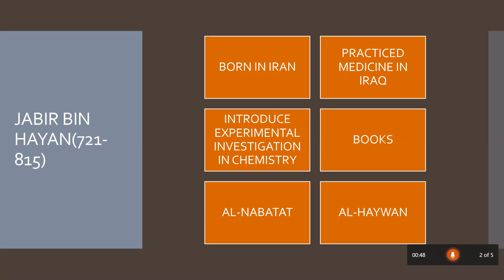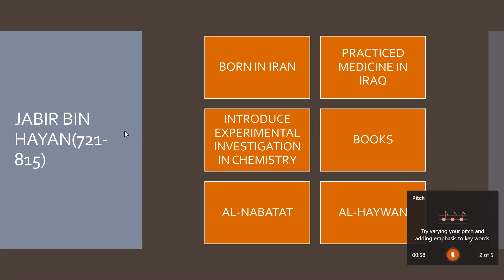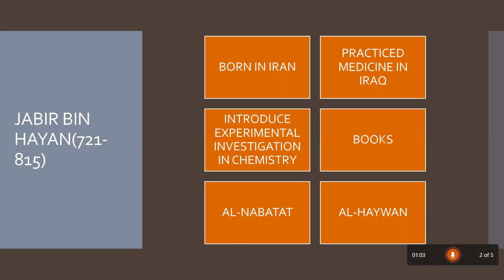The first of our scientists is Jabir bin Hayyan. Jabir bin Hayyan was born in 721 and died in 815. They were born in Iran. After completing their qualifications, they went to Iraq to practice medicine.